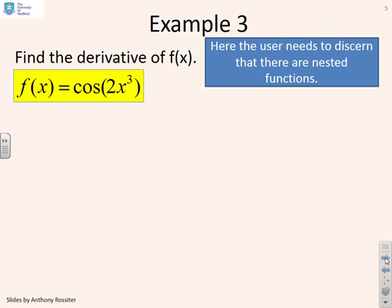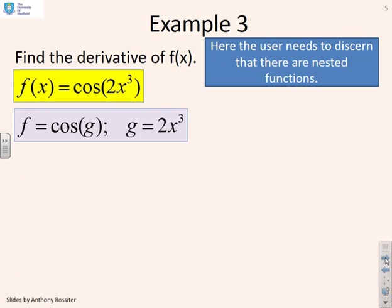Example 3. Find the derivative of f of x, where f of x is cos of 2x cubed. And here you have to work out which is the function of a function. I can see that I've got a basic cos g where g is 2x cubed. So I've actually identified the inner function by myself.